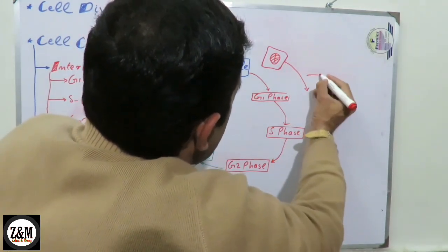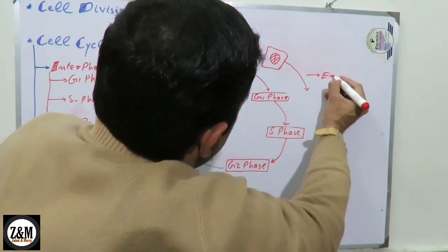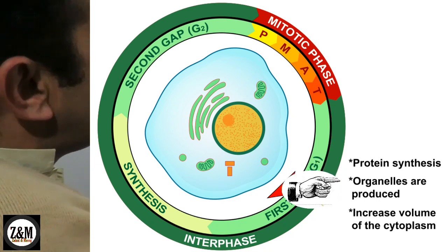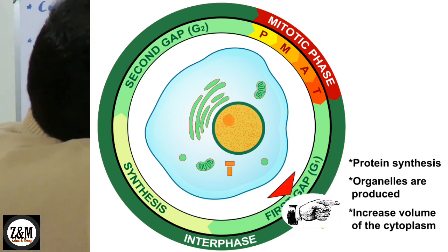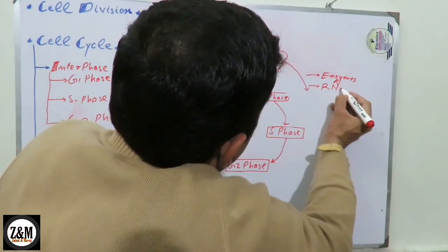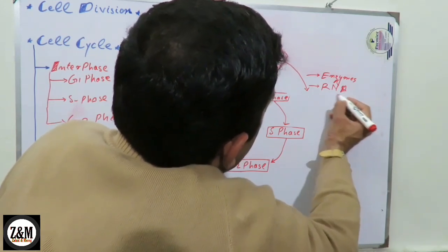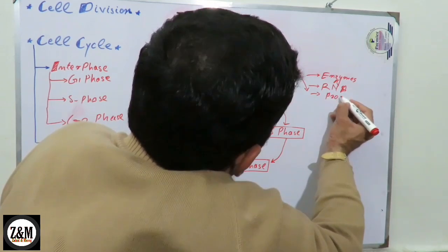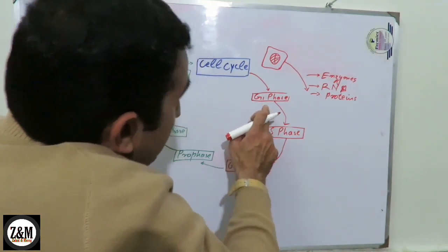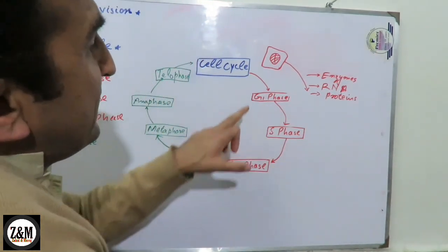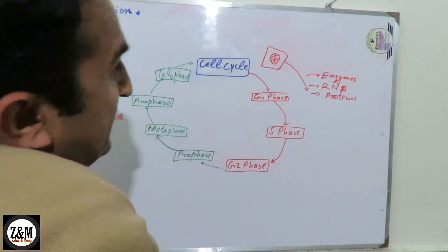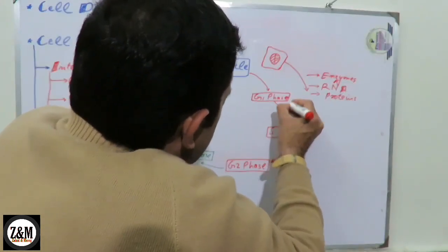In G1 phase, if the cells have some enzymes — and the DNA or chromosomes — the enzymes help produce RNA and proteins. The cells have some DNA, and the chromosomes double. This is the growth one phase.